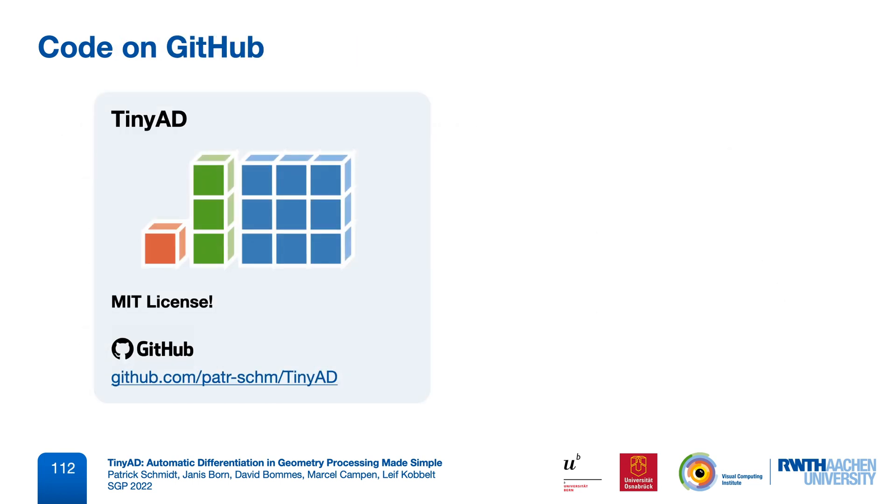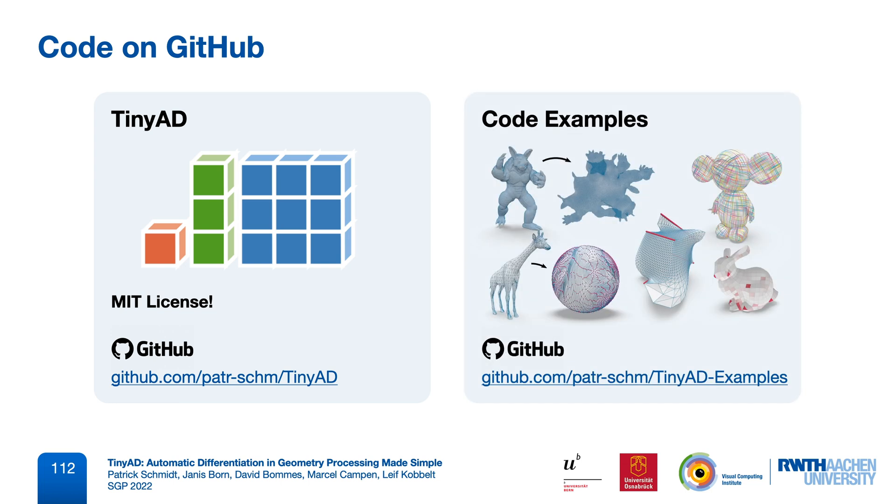TinyAD is available on GitHub under the MIT license. We invite everyone to try it, use it in research projects, and contribute improvements. We also provide a repository with a growing list of application examples, including how to use TinyAD with different mesh libraries. Right now, we show how to use OpenMesh, PolyMesh, Geometry Central, and LibIGL-style matrices. Thank you for your attention, and we would be very happy to see TinyAD being used in future research.